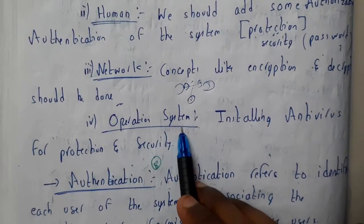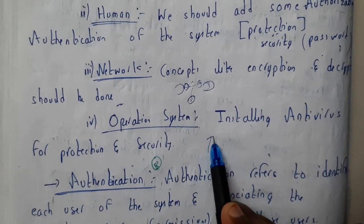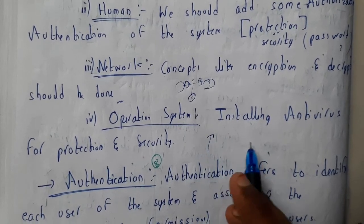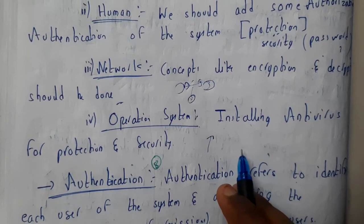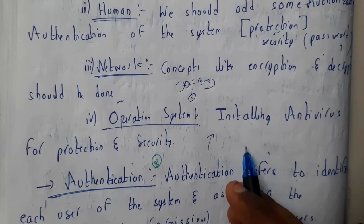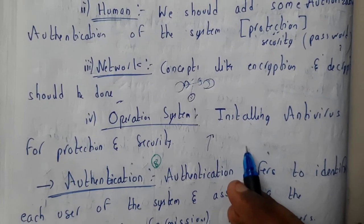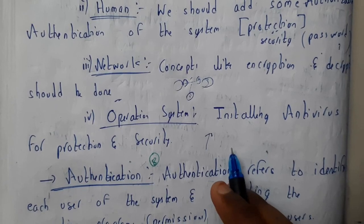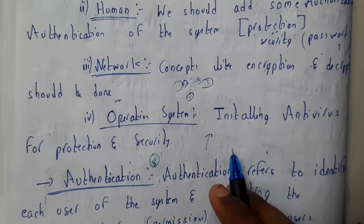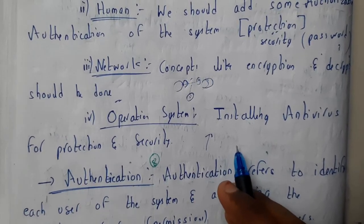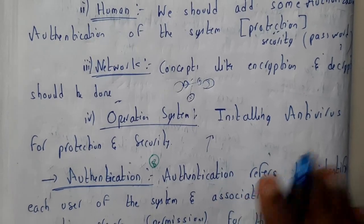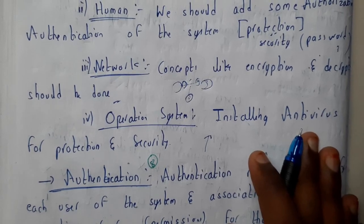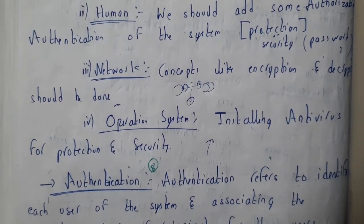The fourth level is operating system security. You need to install a powerful antivirus like Norton or Avast. Installing only a trial version won't work effectively. Operating systems have a built-in firewall, but a dedicated antivirus is needed for full protection. In the next tutorial, we will go through authentication.